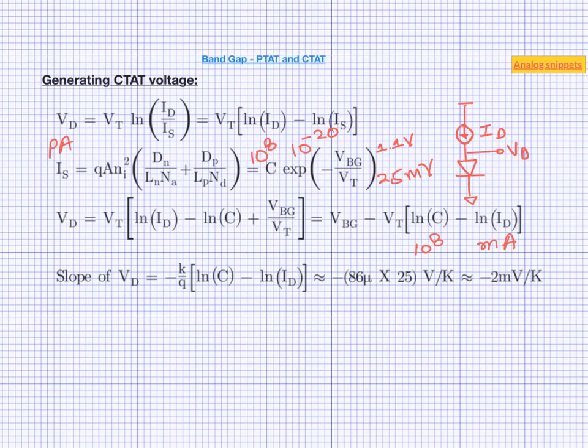So you can see that CTAT voltage is much messier than the PTAT voltage. And most of the errors and inaccuracies in band gap reference voltages are related to in fact CTAT voltage. We will explore these errors and inaccuracies in future videos along with the solutions and fixes.